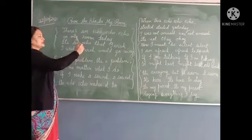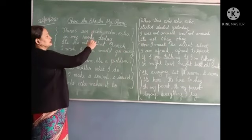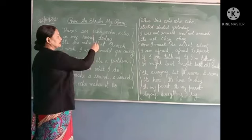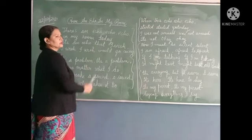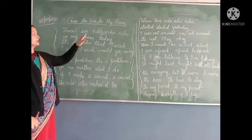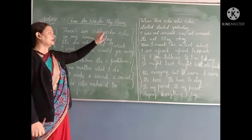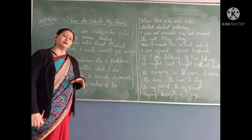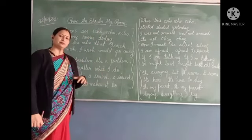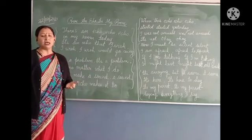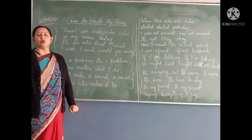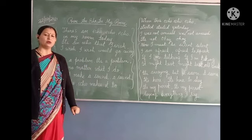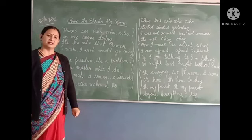So what happens in this poem? We are going to understand through its explanation. You can see that some words are repeated or written in smaller text — that means the boy says them once and the echo returns the sound. Let us start the explanation.